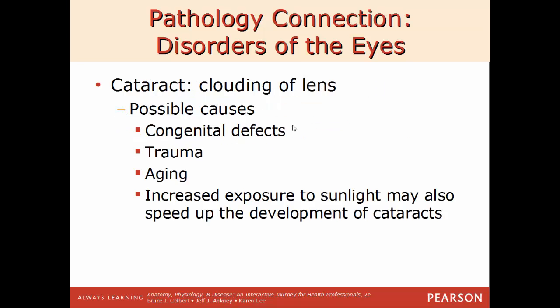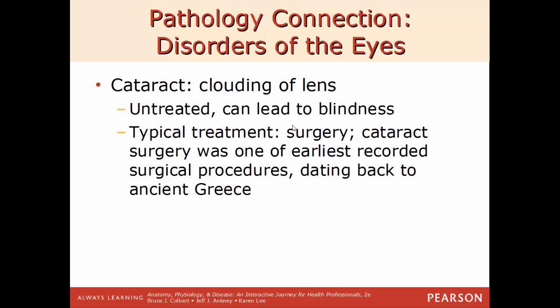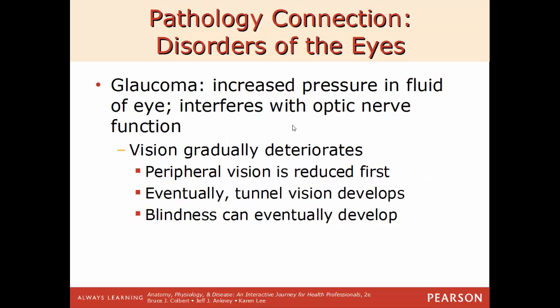A cataract is a clouding of the lens. Possible causes include congenital defects, trauma, aging, and increased exposure to sunlight, which can speed up development. If left untreated, the entire lens becomes completely clouded over and the person becomes blind. Treatment is surgery, which is actually one of the earliest recorded surgeries, going back to ancient Greece.